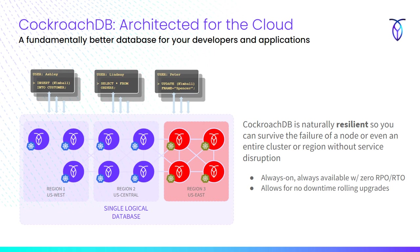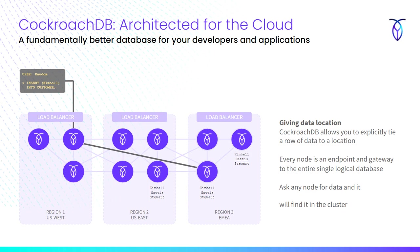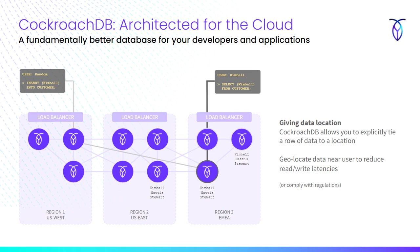You can also use this to speed access to data. With three clusters — one in US West, one in US East, one in EMEA — this is one single logical database. A user in LA asking for data will have the leaseholder located close to them. So we can pin the rack leader or leaseholder close to the user, enabling cross-cluster, cross-regional data access with low latency. That's pretty powerful and one of the key reasons people use CockroachDB.